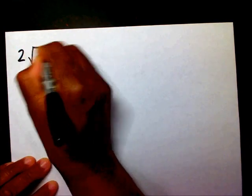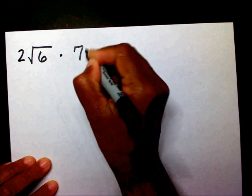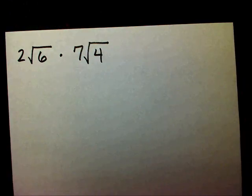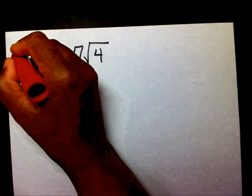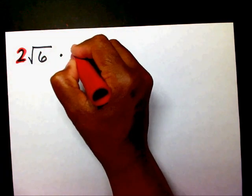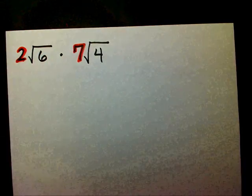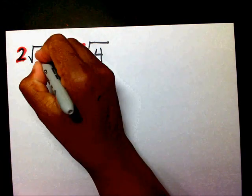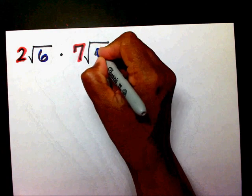Let's make it a little bit harder now. We have 2 radical 6 times 7 radical 4. Well, if you notice, we have some outside numbers. We have an outside number of 2 and 7. And then our radicands are 6 and 4.